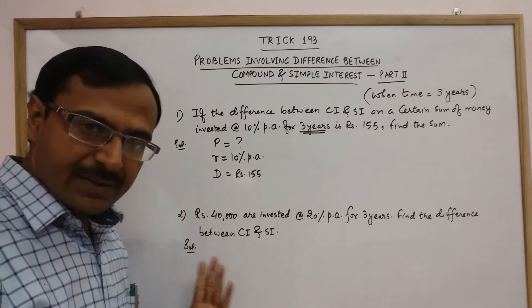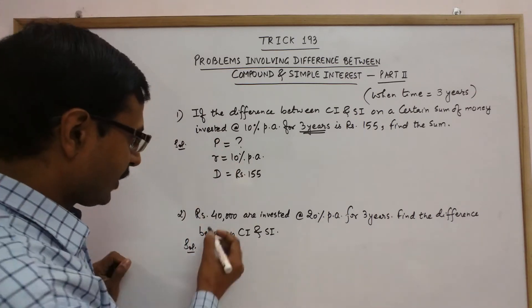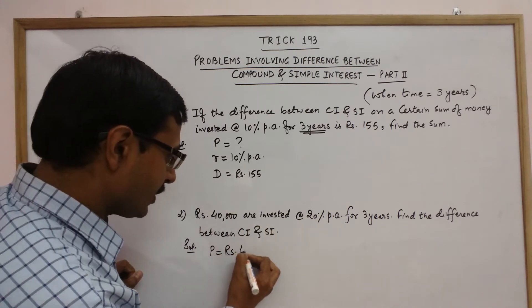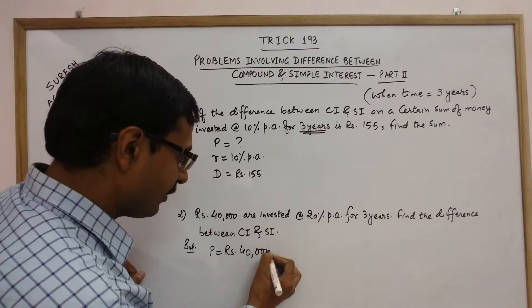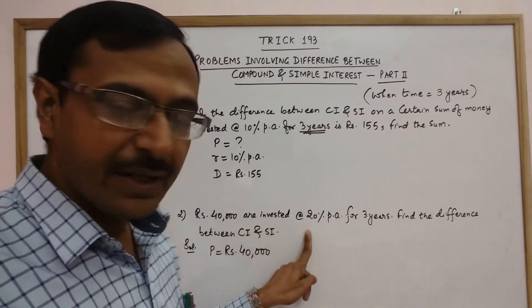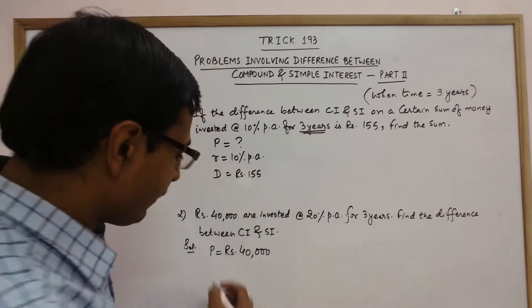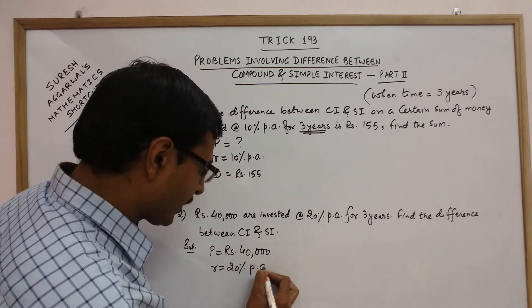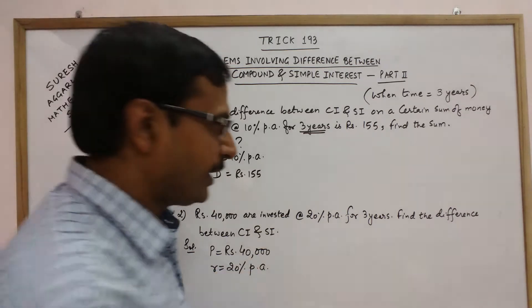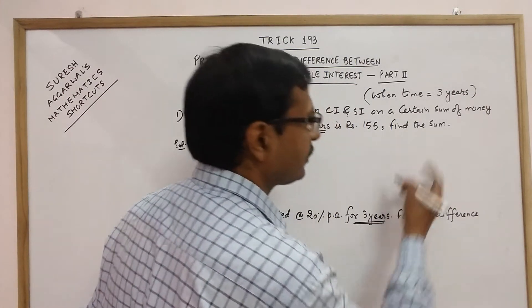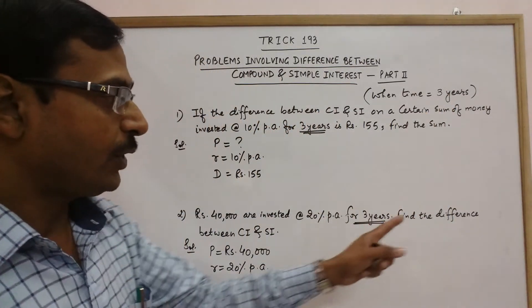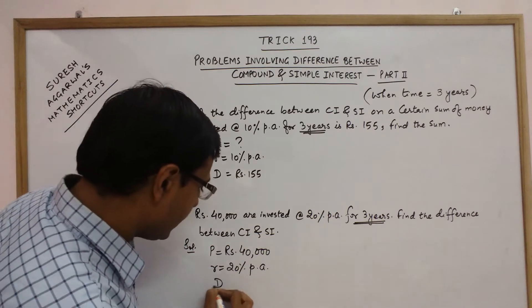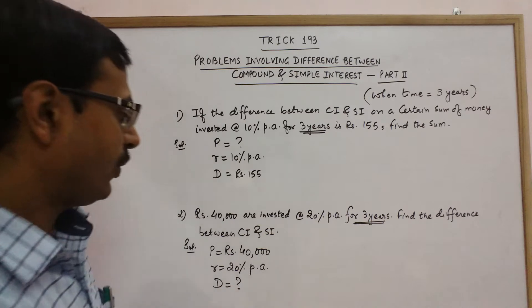Similarly in the second question, we will have P equal to Rs. 40,000. So we are given one variable invested at the rate of 20% per annum. So we are given the rate of interest 20% per annum. So again two things are given and time is again 3 years, so 3 years is the time. And we have to find the difference between CI and SI. So D is required to be found out.